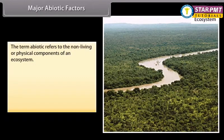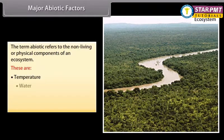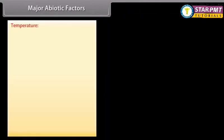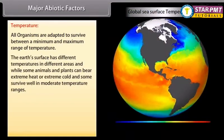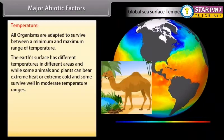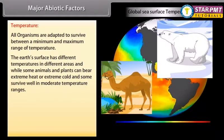The term abiotic refers to the non-living or physical components of an ecosystem. These are temperature, water, light, and soil. All organisms are adapted to survive between a minimum and maximum range of temperature. The earth's surface has different temperatures in different areas, while some animals and plants can bear extreme heat or extreme cold, and some survive well in moderate temperature ranges.